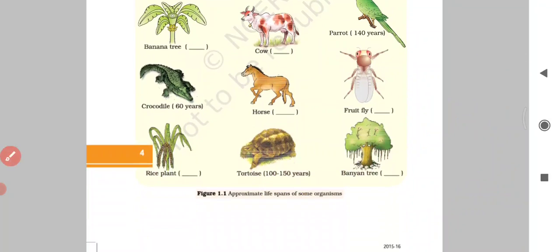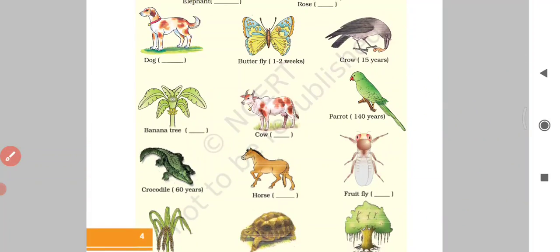Parrot has around 70 to 80 years or even more life span, which is 140 years, which is very big.